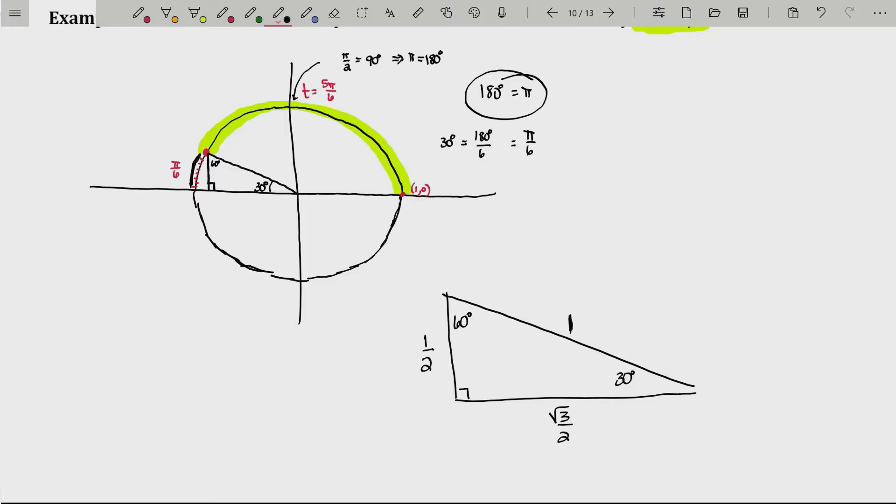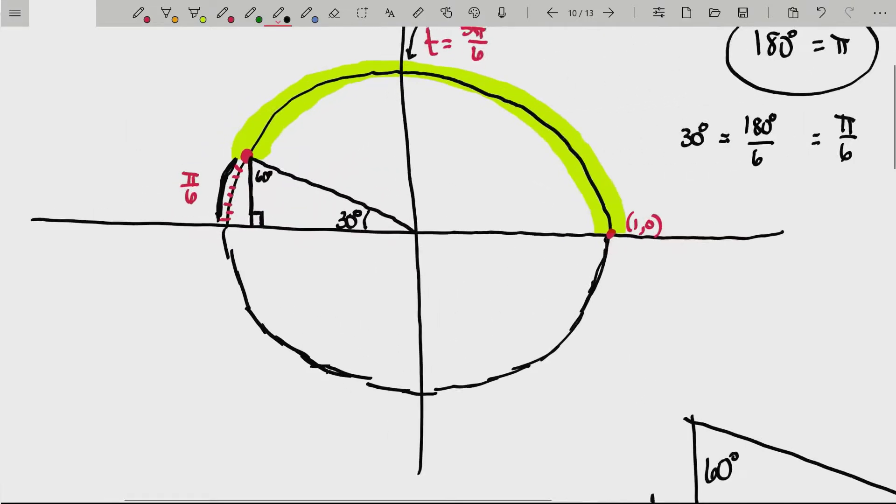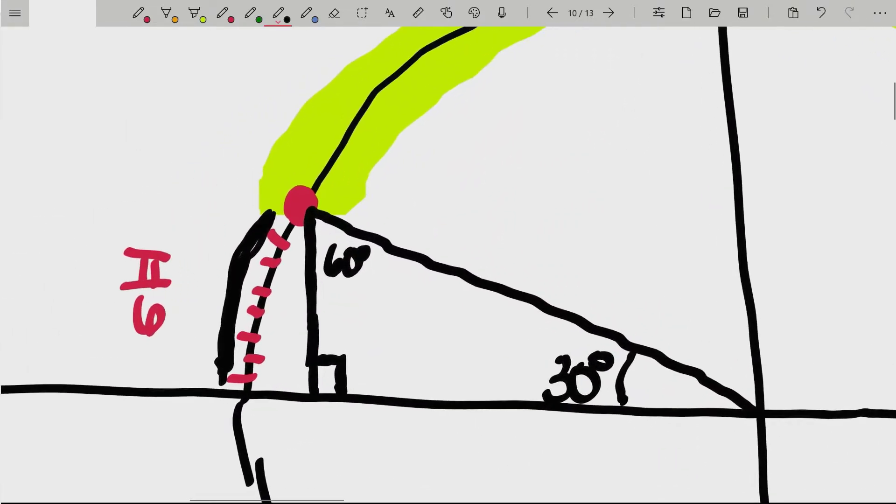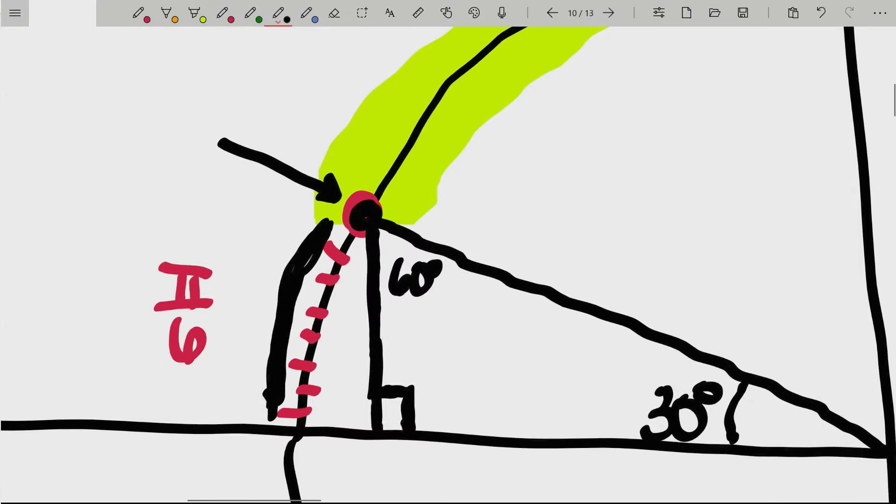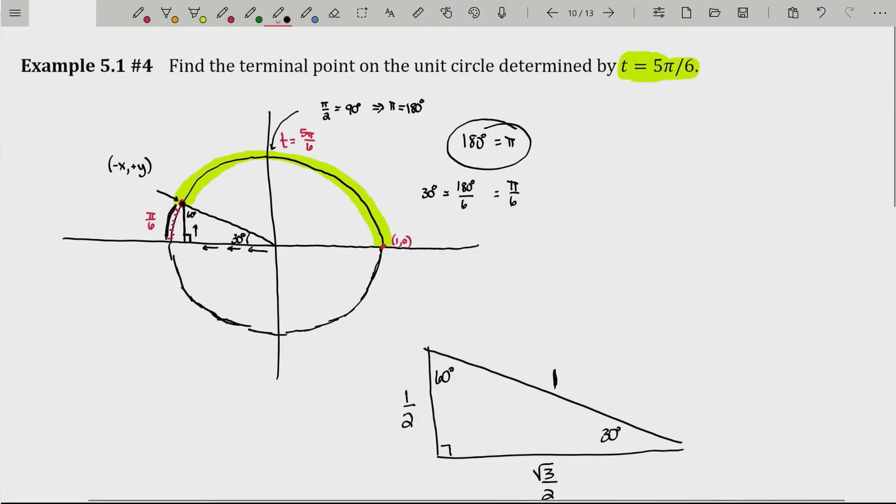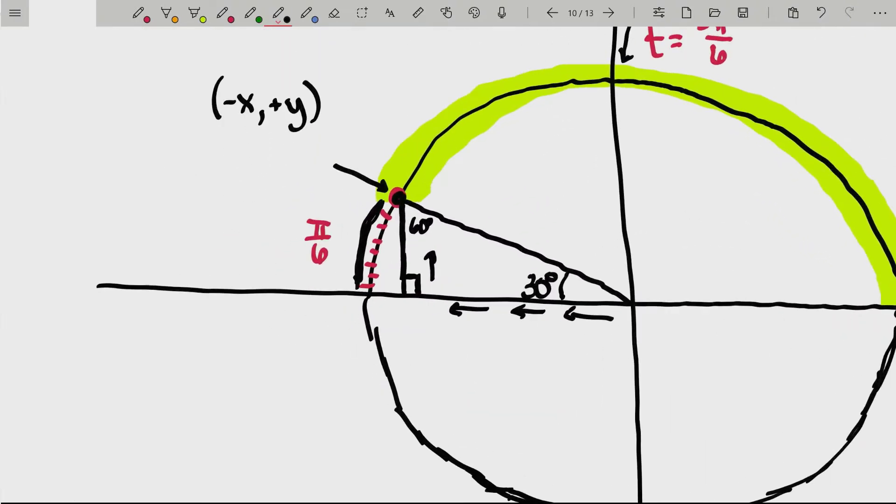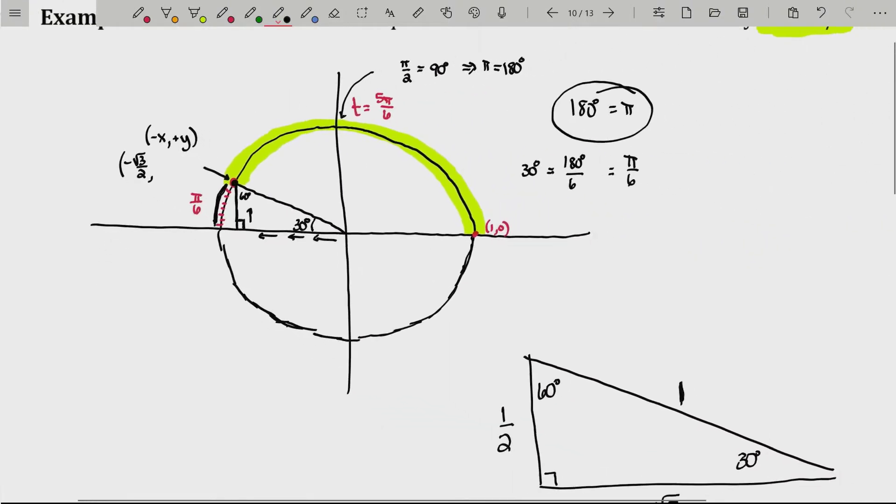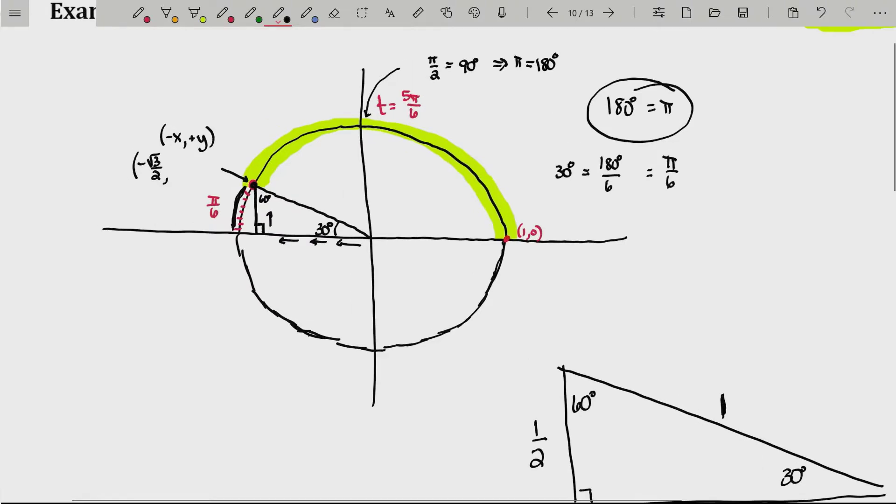Now, here's the deal. Because we're in a coordinate system, those lengths can take on negative values. Notice this point right here has a negative x value and a positive y value. It has a negative x value and a positive y value, because you went back along the x-axis and then up in the y direction to arrive at that point. We know the x distance is the distance opposite 60 degrees, root three over two. So, this point must be a negative root three over two. And the y value is opposite the 30 degrees. It's going to be a positive one-half.